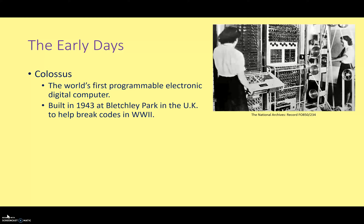Have a look at this picture over here. This is a very important early computer system — this is the Colossus. It holds the distinction of being the world's first programmable electronic digital computer, and it was built in 1943 at Bletchley Park in the UK to help with the job of breaking German codes in World War II.